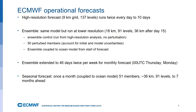The ensemble is also coupled to the ocean model from the start of the forecast. In two particular forecasts in the week we have what's called our extended range system, which runs out to 46 days on Mondays and Thursdays. And then we also have the seasonal forecast — Peter nicely showed the El Niño or ENSO forecast for the Niño 3.4 region — which is run once a month from the first day of the month.